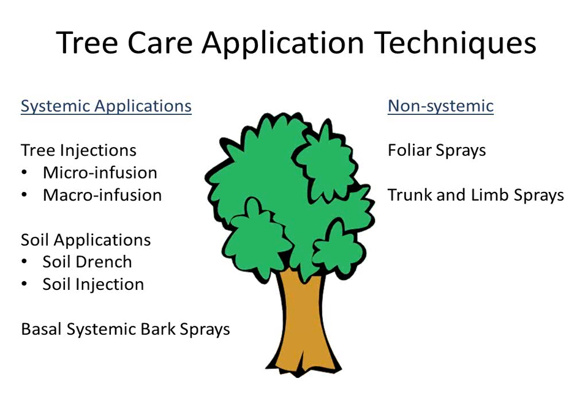Non-systemic applications include foliar sprays, which can protect leaves from different leaf-feeding insects or foliar diseases. We also have trunk and limb sprays that can be applied to protect from wood-boring insects as a prophylactic spray to prevent larvae from hatching and feeding on trees or adults from feeding on trees.